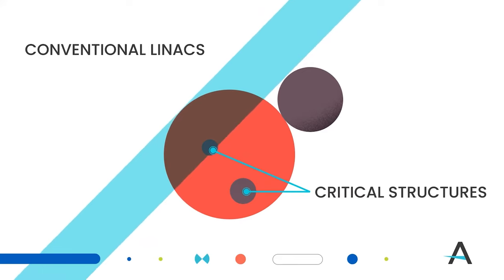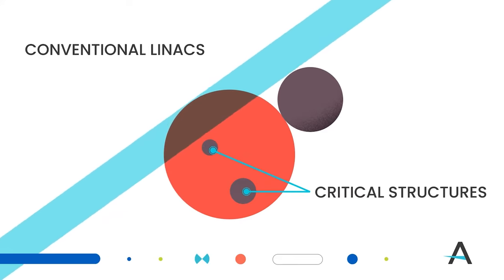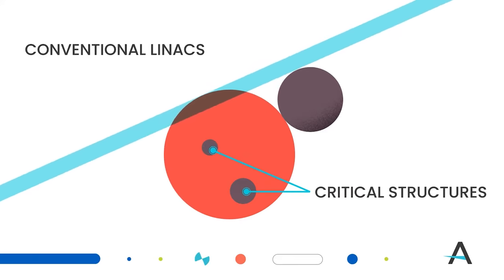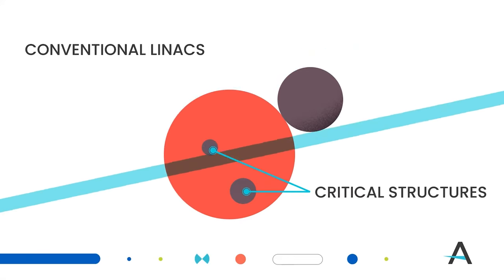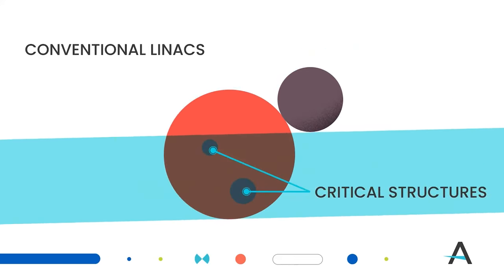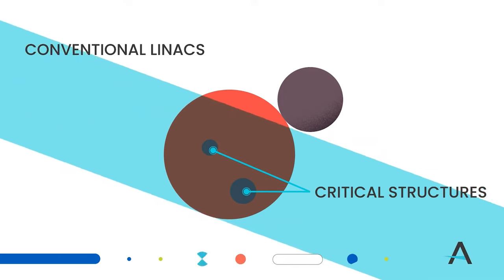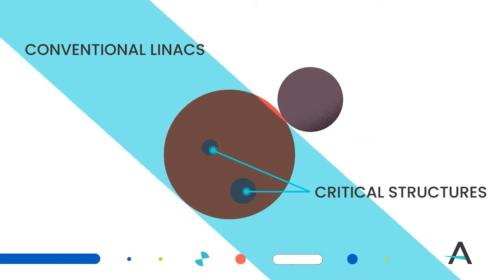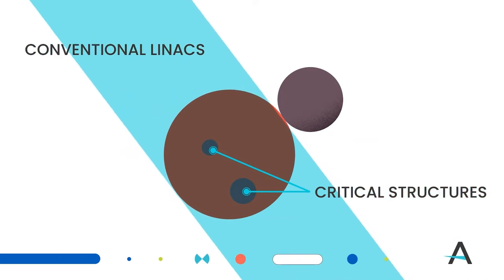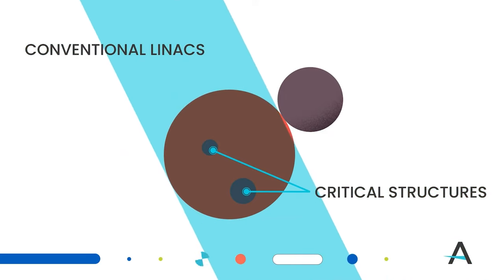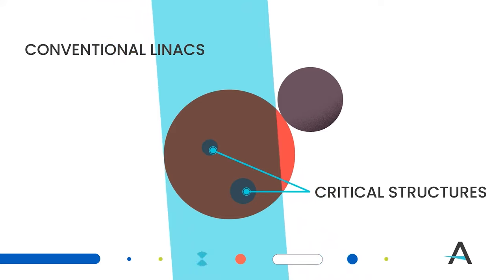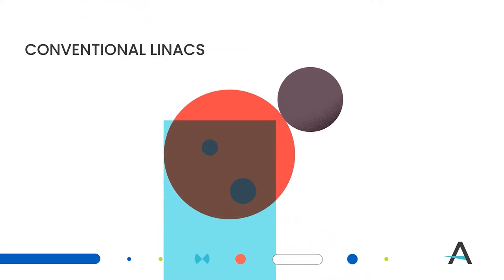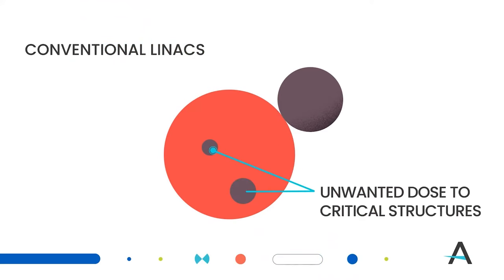Various configurations can be used in an effort to treat the tumor and avoid normal tissue within the target region, as well as normal tissue adjacent to the target region. Limitations in how tumor fields can be shaped result in an inhomogeneous dose to the target and unwanted dose to critical structures.